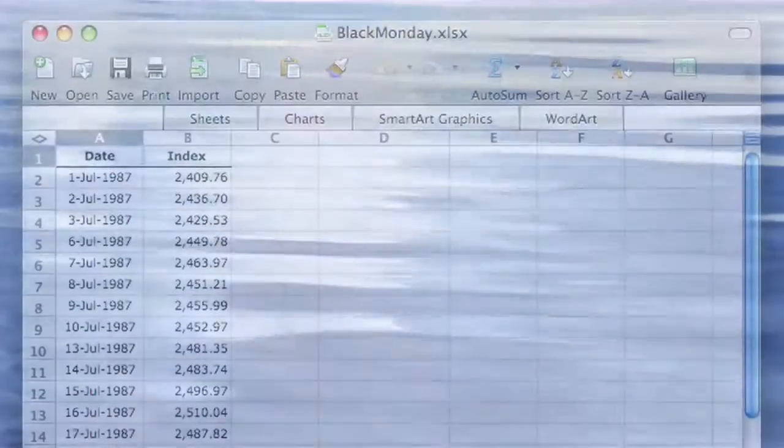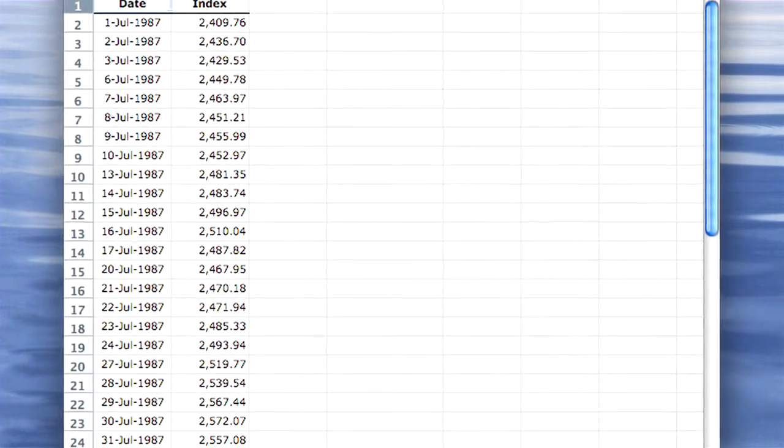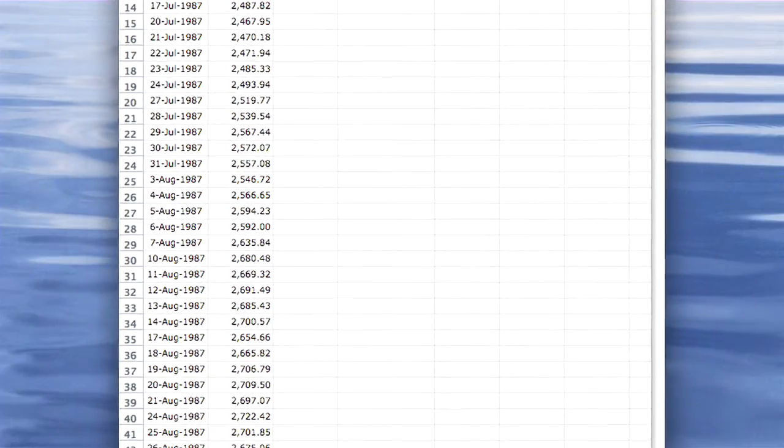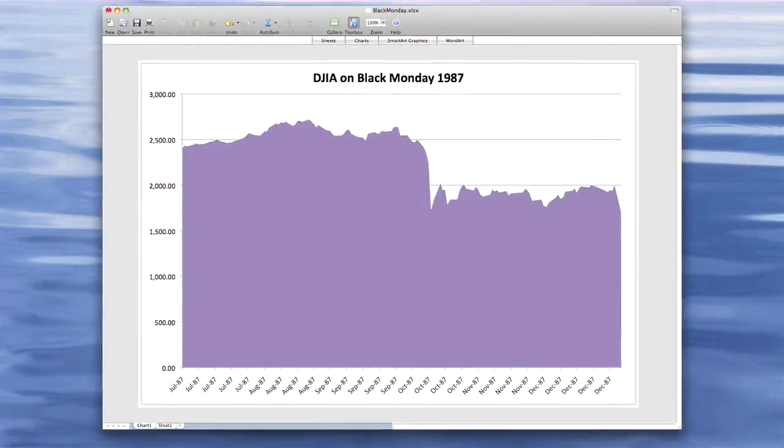You probably use graphs all the time in order to simplify complex information. For example, here is a set of numbers that represents the largest stock market crash in history on Black Monday in 1987. I know that for me it can be hard to understand what's going on here until I see it in a graph. Here's one I created using Microsoft Excel.